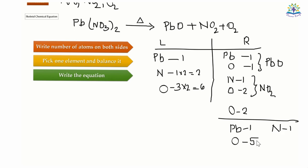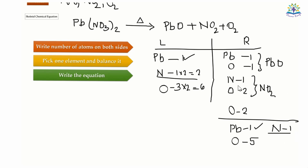Initially, the number of atoms of lead on the left and right are equal. The number of atoms of nitrogen on the left is two, whereas on the right is one. Therefore, I will multiply 2 on the right side and also add 2 to the compound on the right side.